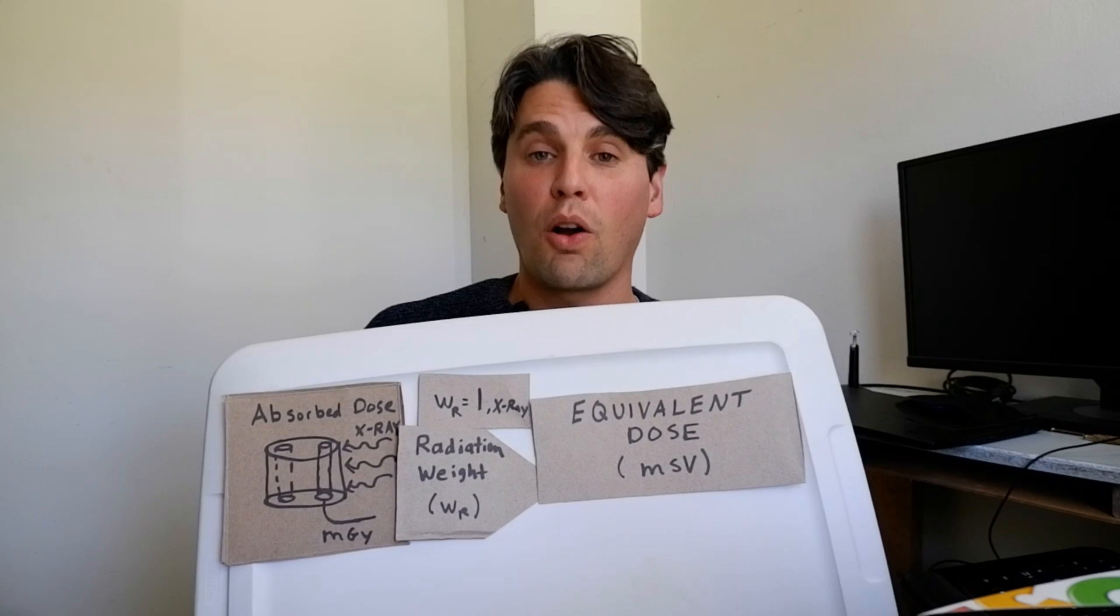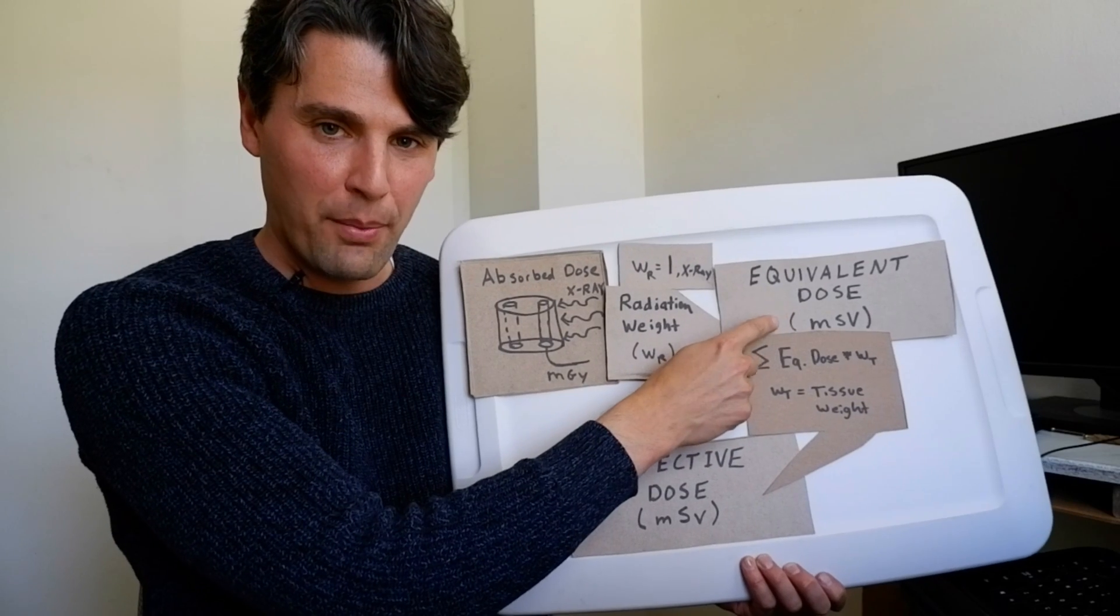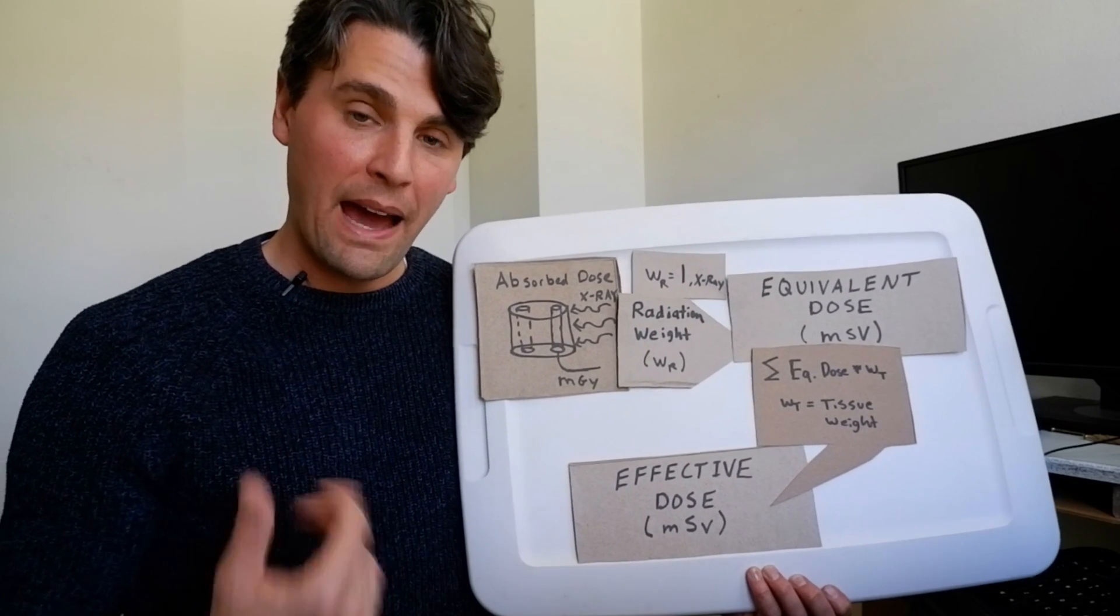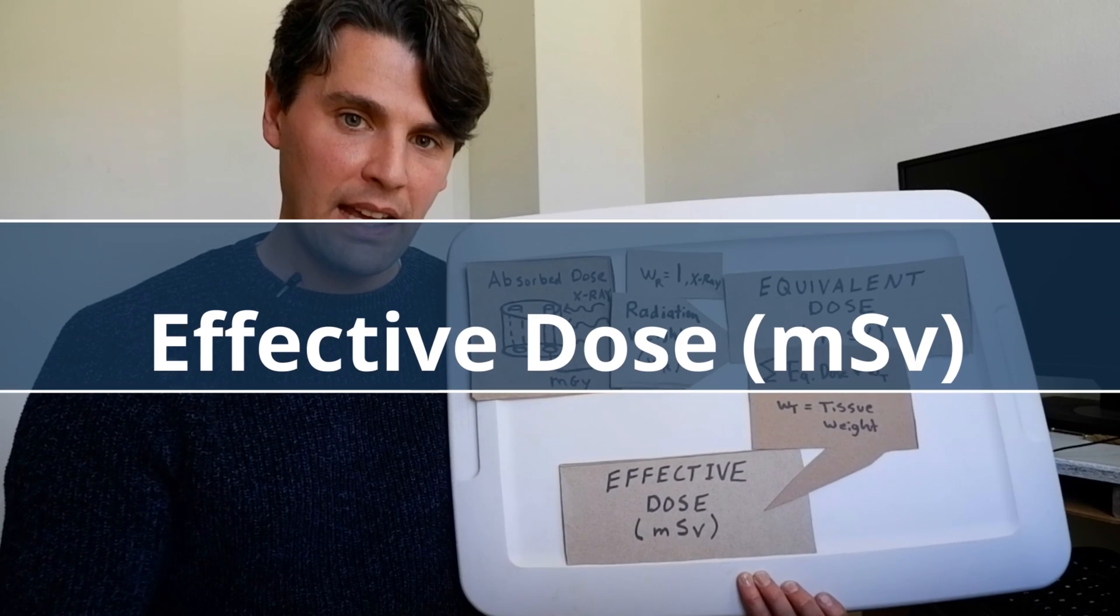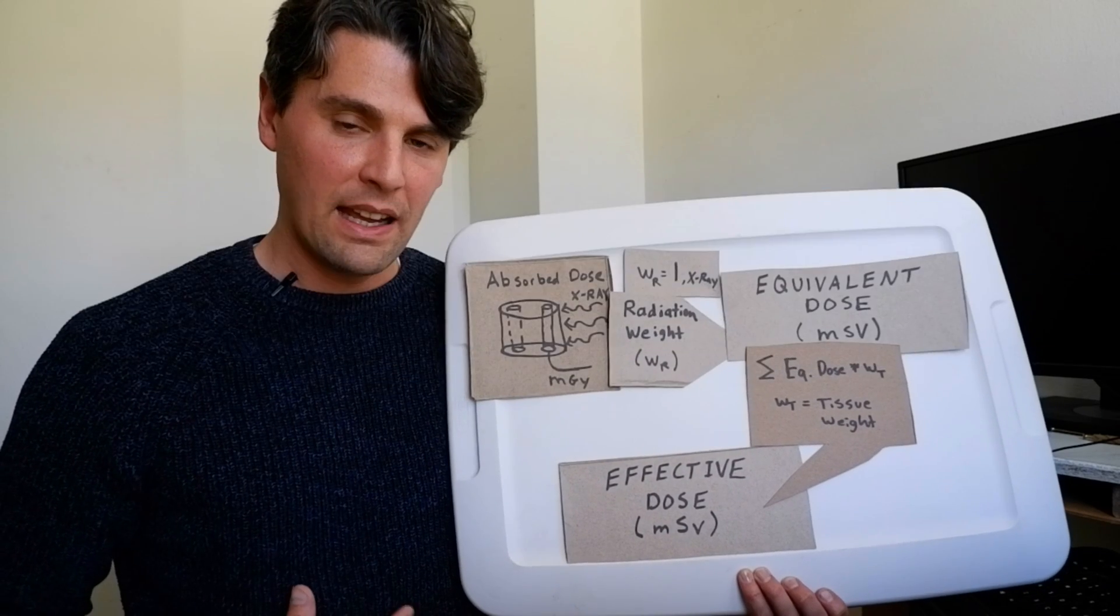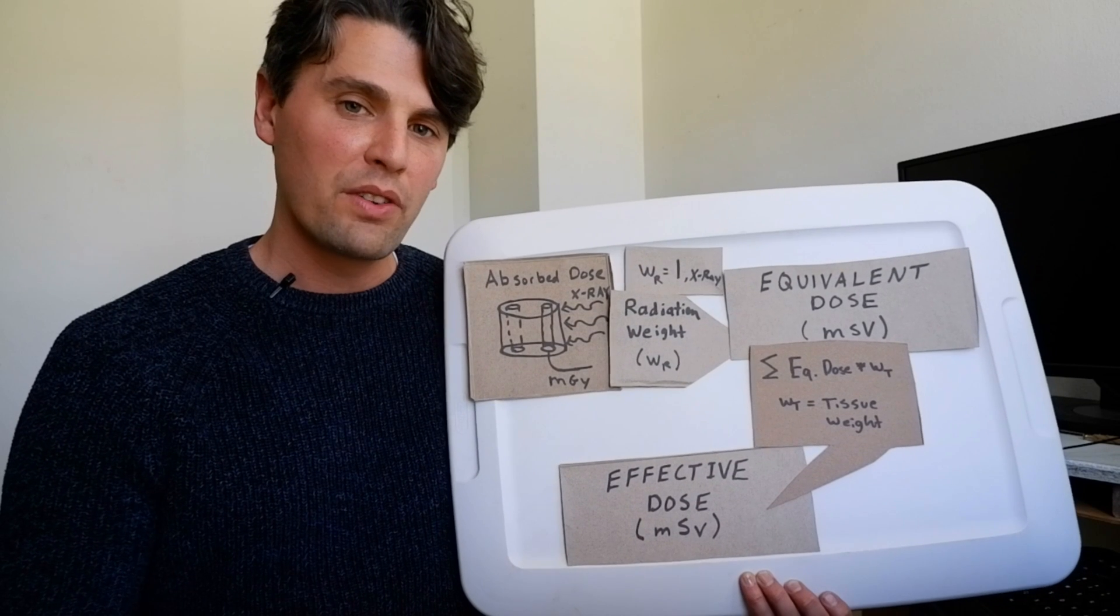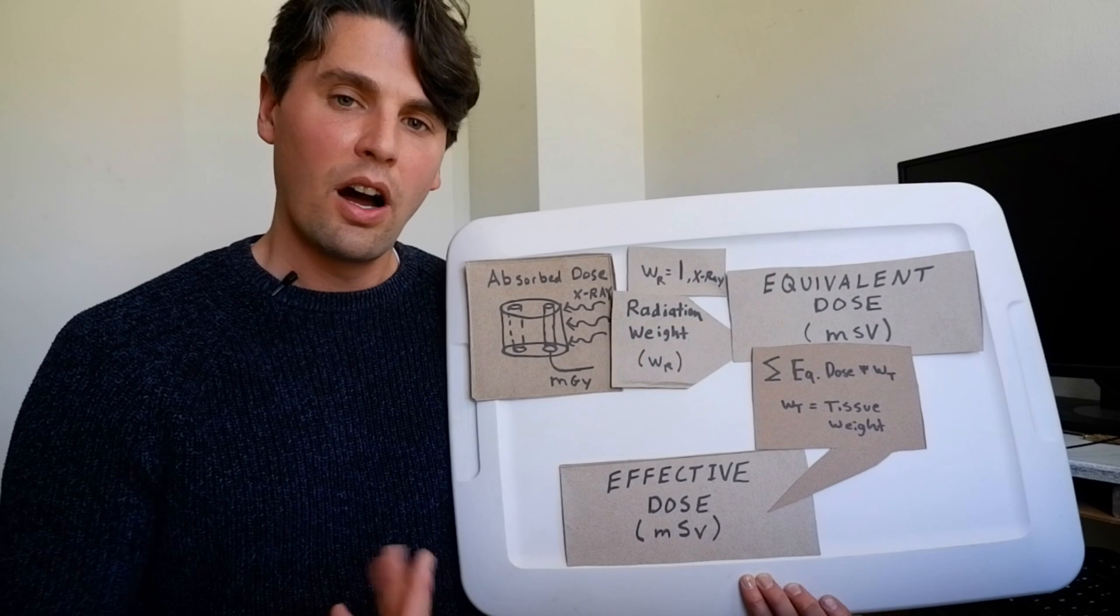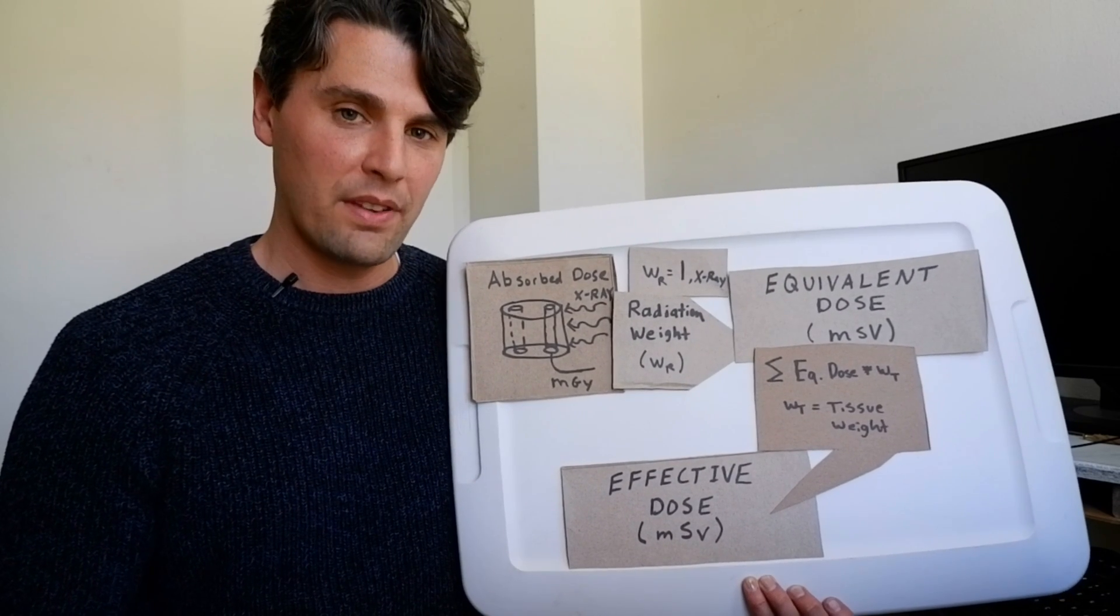Then we want to take our equivalent dose and find an effective dose. In order to go from the equivalent dose to the effective dose, it matters what types of tissue are irradiated. So if we're irradiating the brain in comparison with irradiating the lungs, there's going to be a different weighting factor because of what's called the radiosensitivity of those given tissues or the likelihood of damage that's going to occur in those types of tissues.